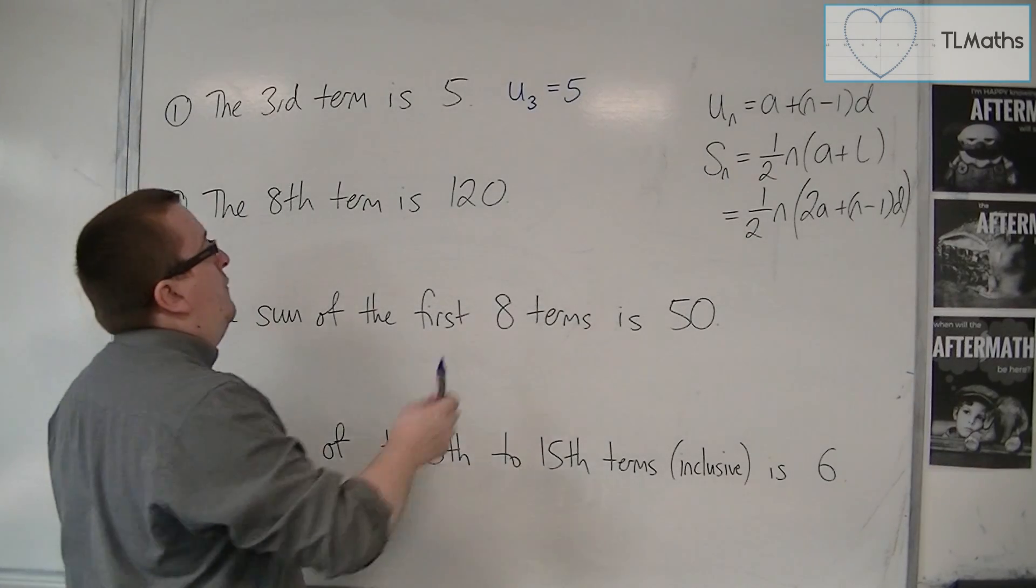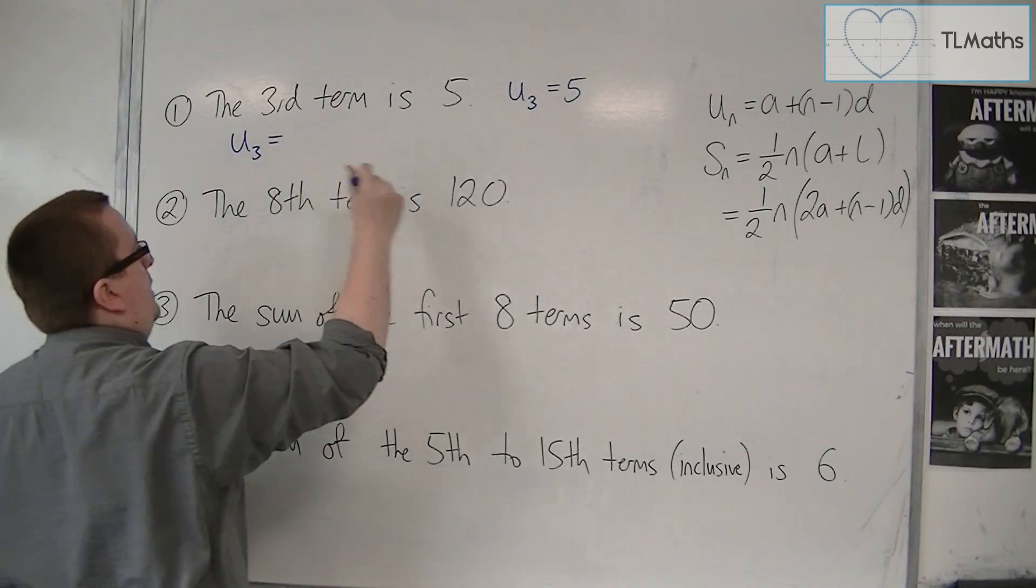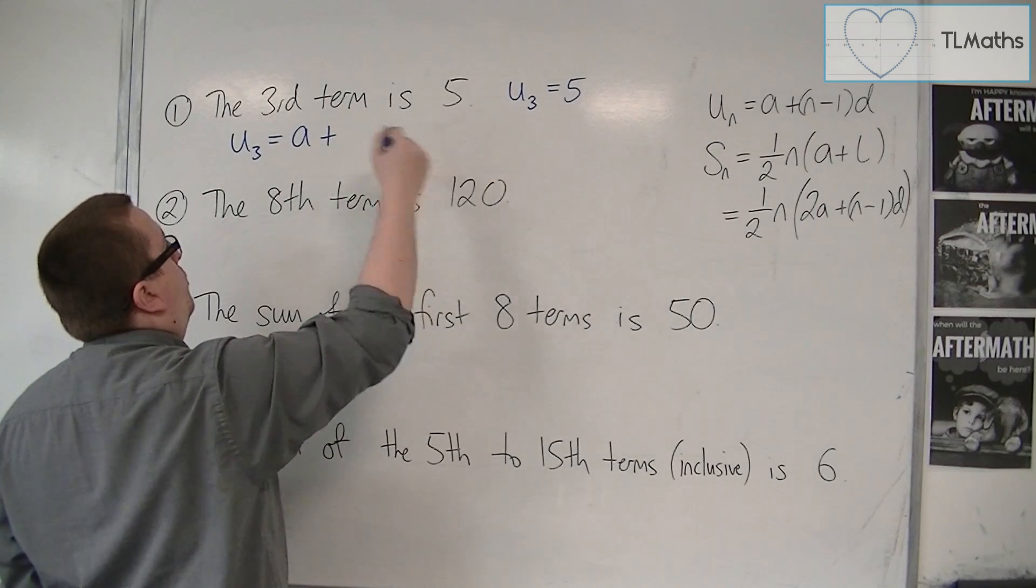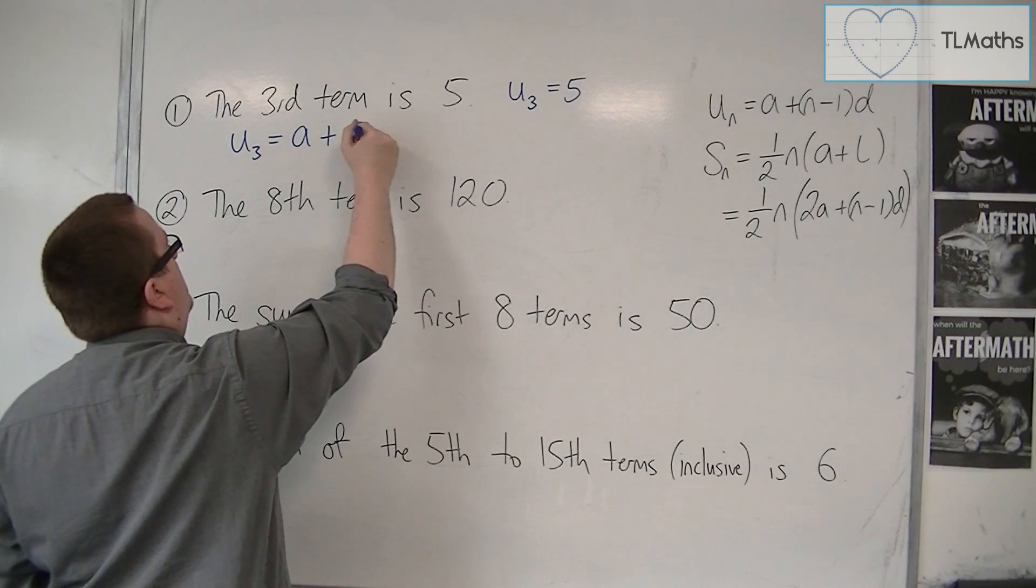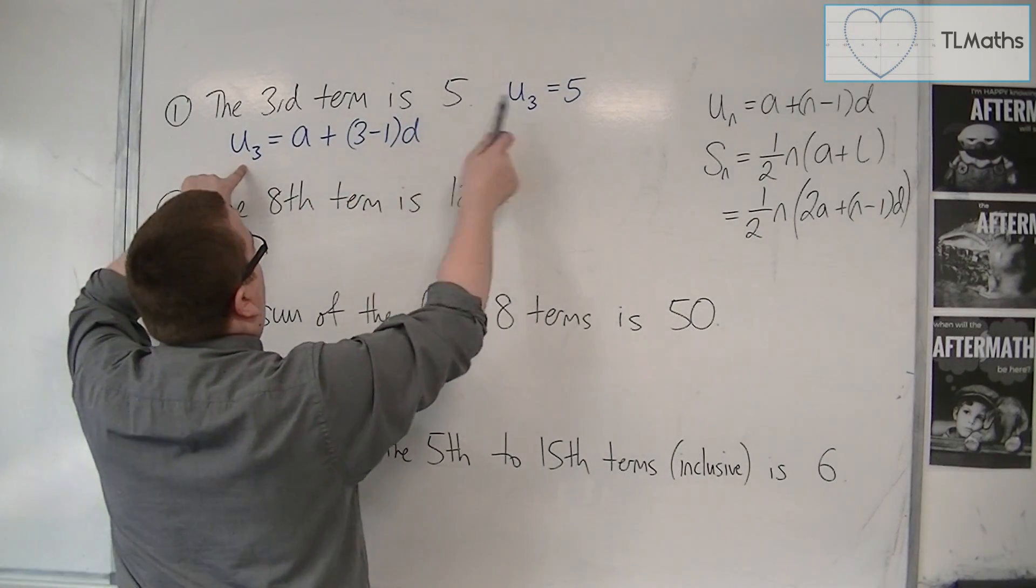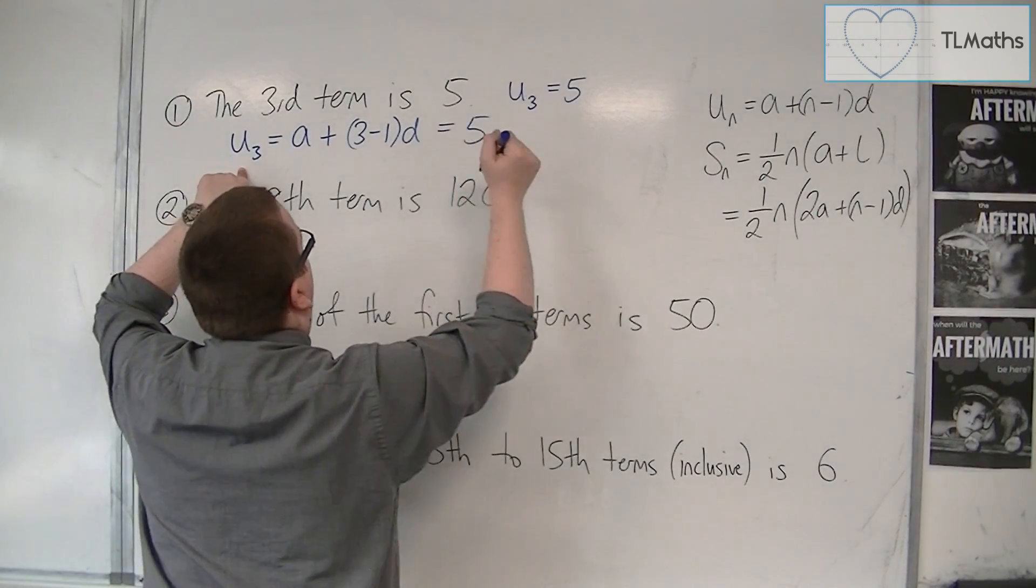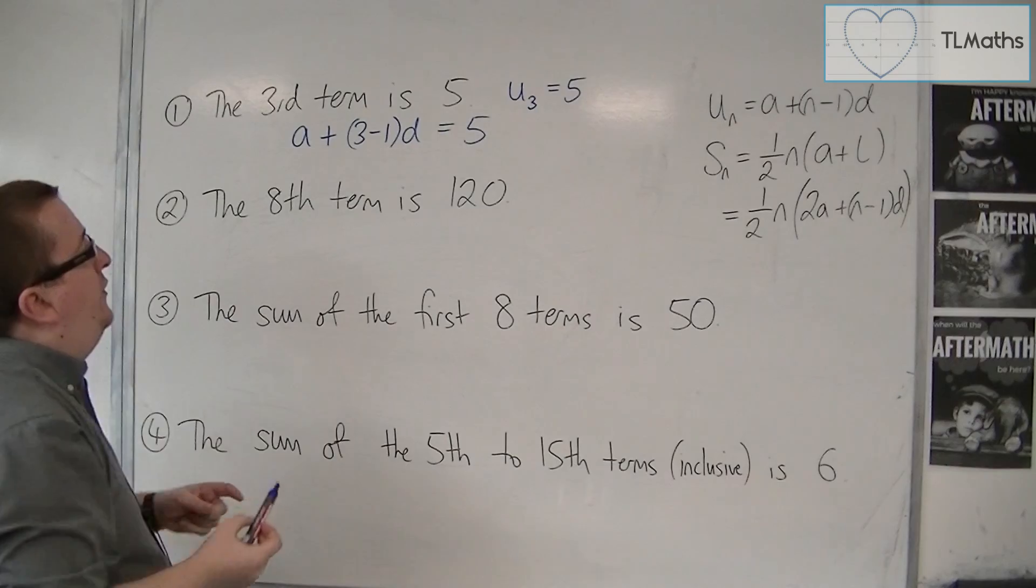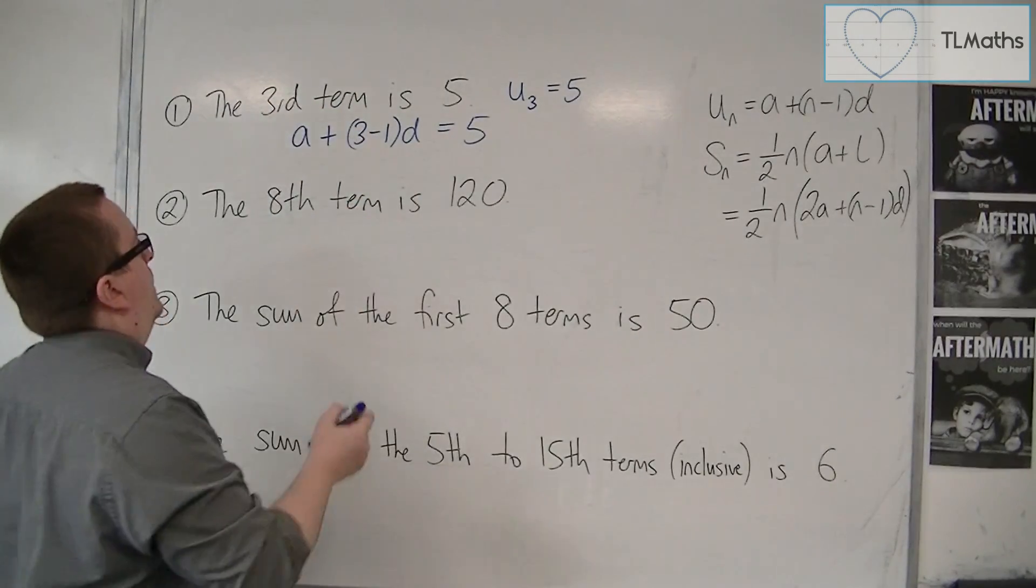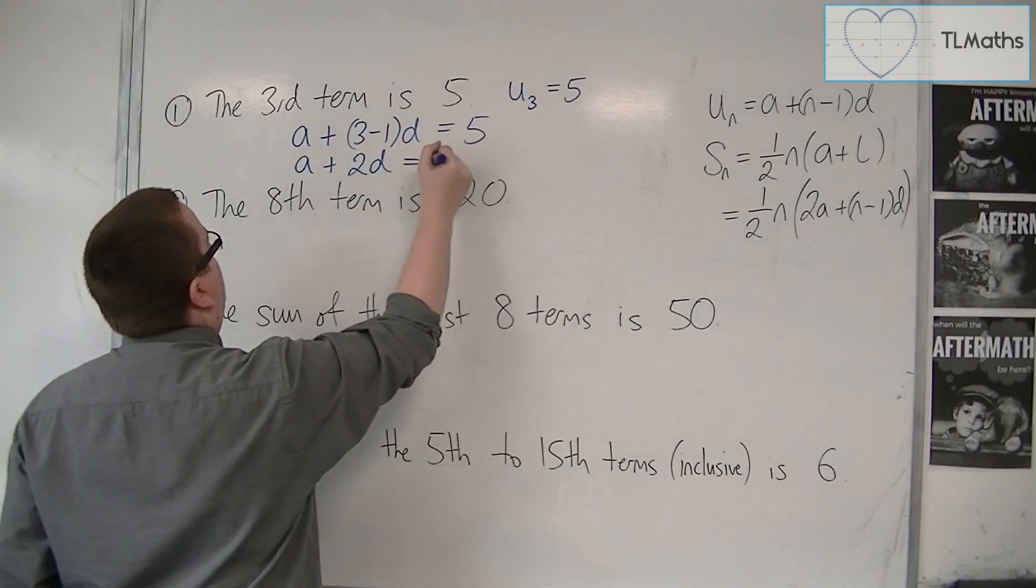So if U3 is five, then U3, using this, is a plus n minus 1, so 3 minus 1, D. And because I know that U3 is equal to five, this must be equal to five. This has converted this information into an equation. So I can write this as a plus 2D is equal to five. That is the type of step that we're looking for here, going from a sentence to an algebraic equation.